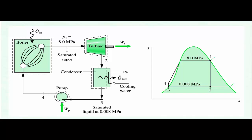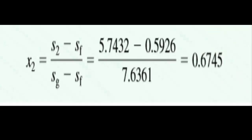We are using this formula in which S2 minus Sf divided by Sg minus Sf. We go to the table and see the values of Sf and Sg and we put into the formula, and the quality came out as x2 = 0.6745.